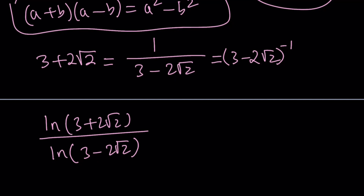Whenever you have something like 1 over x, you can write it as x to the power negative 1.